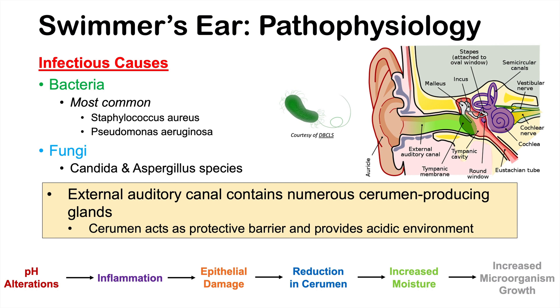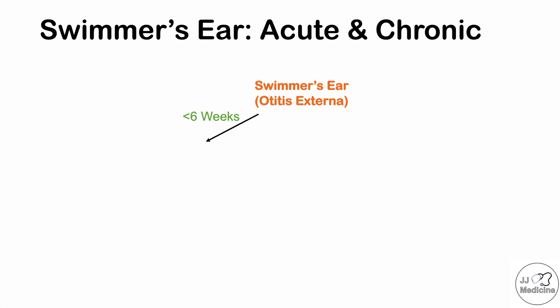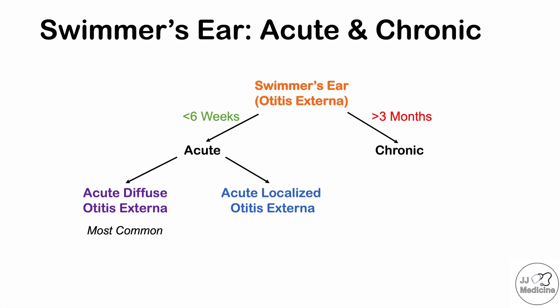For the most part, it's infectious causes — and most commonly bacteria — that cause infection in this area. Now, before discussing signs and symptoms, it's important to distinguish acute from chronic swimmer's ear. If it lasts less than six weeks, it is considered acute otitis externa. If the condition lasts greater than three months, it is considered chronic otitis externa. Anything in between may be considered subacute.